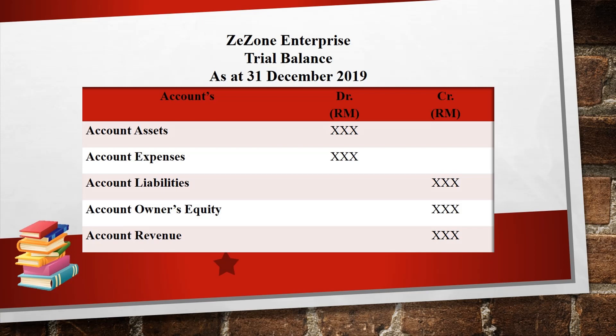The amount transferred to the balance sheet is based on their balance in the ledger. For assets and expenses accounts, their balance will transfer to the debit side in trial balance. While liabilities, owner's equity, and revenues accounts, their balance will transfer to the credit side in trial balance.